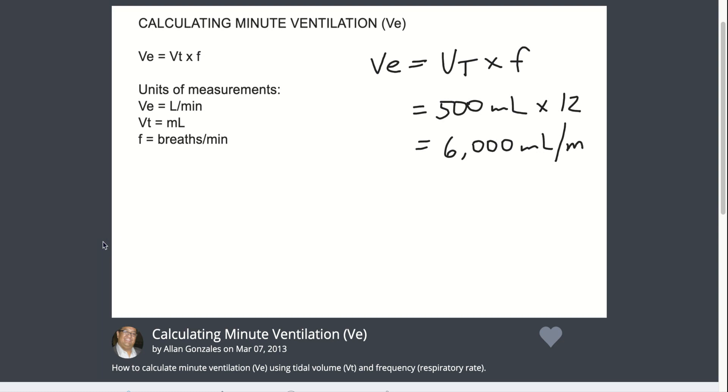However, in order to convert this to liters, we move the decimal places three places to the left. So, this is also the same as 6 liters per minute.